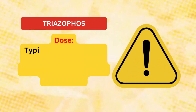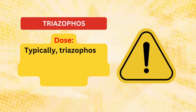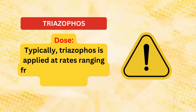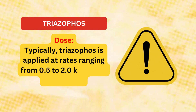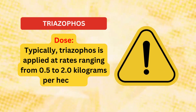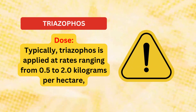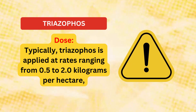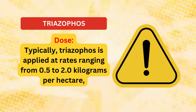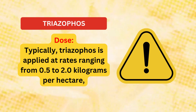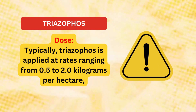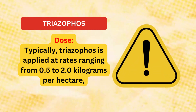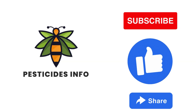Dosage. The recommended dosage of triazophose varies depending on the target pest, crop type, and application method. Typically, triazophose is applied at rates ranging from 0.5 to 2.0 kilograms per hectare, with specific instructions provided by manufacturers and regulatory agencies. However, its use should be carefully managed due to its potential environmental impact and toxicity to non-target organisms.